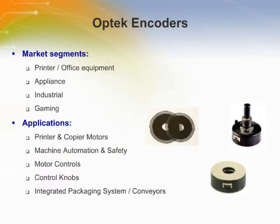Optic encoders can be used in different segments such as printer or office equipment, appliance, industrial, and gaming. Typical applications include printers, motors, motor controls, control knobs, machine automation, and machine safety.